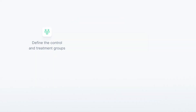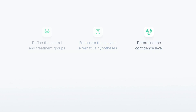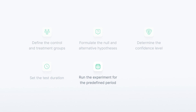Define the control and treatment groups. Formulate the null and alternative hypotheses. Determine the confidence level. Set the test duration. Run the experiment for the predefined period. Finally, analyze the results.